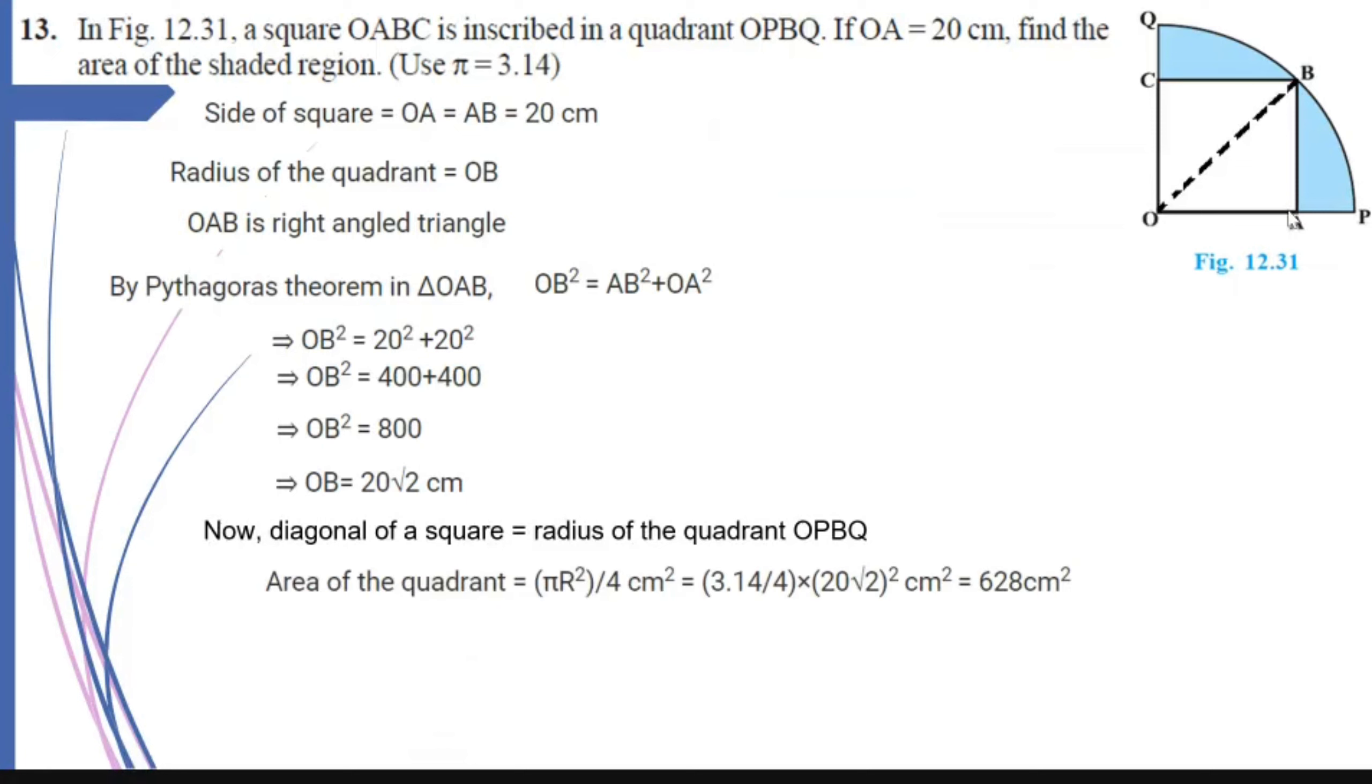It is 1 upon 4 into pi R squared, which is equal to 3.14 upon 4 into 20 root 2 whole squared, which comes out to be 628 cm squared.